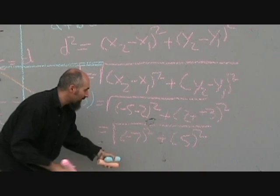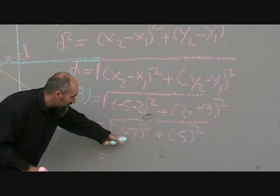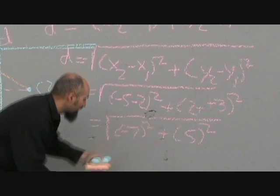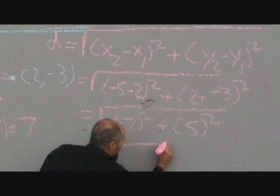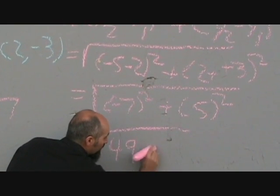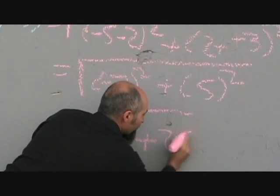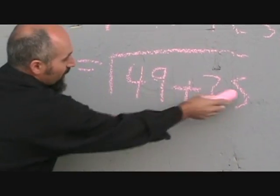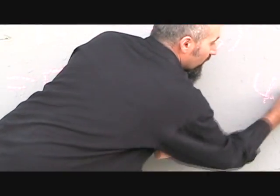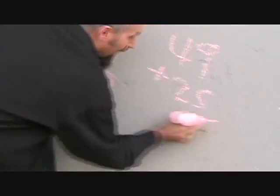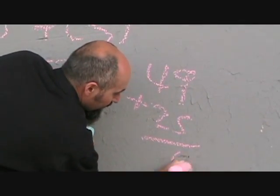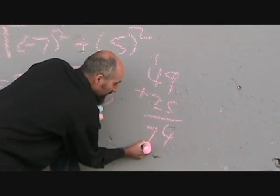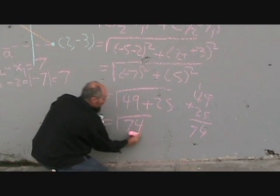Now negative 7 squared, I just stated that you can't have a negative distance, but it doesn't really make a difference because when you square it, it becomes positive. So negative 7 squared is 49 plus 5 squared is 25. So the distance is the square root. When you add these, 49 plus 25, 5 plus 9 is 14, you carry the one up, 2 plus 4 is 6 plus 1 is 7, so 74. So square root of 74.